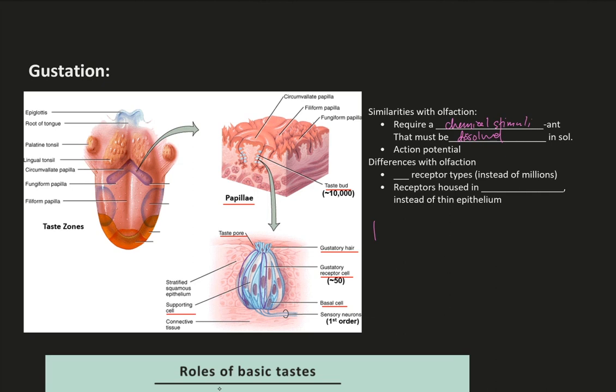Some big differences in taste are each olfactory receptor can detect several different odorants. Gustatory receptors can only detect one type of tastant, one of the five tastes, which is sweet, sour, salty, bitter, and umami. There are only five different receptors for these tastants: sweet, sour, salty, bitter, and umami, and each have their own corresponding receptor.